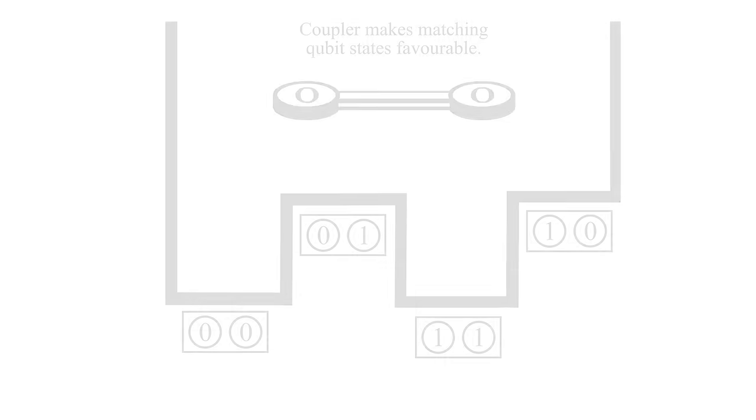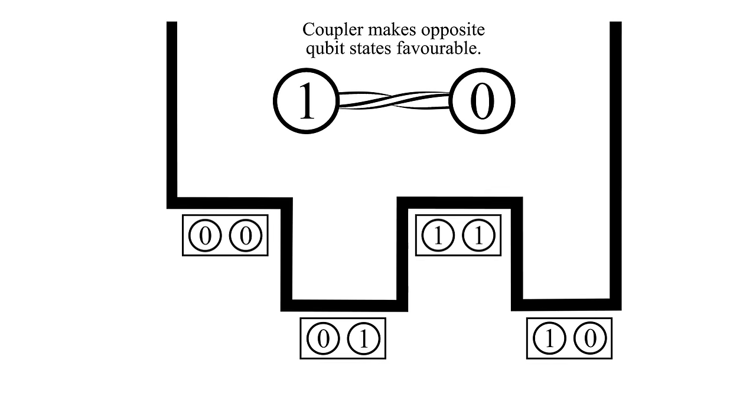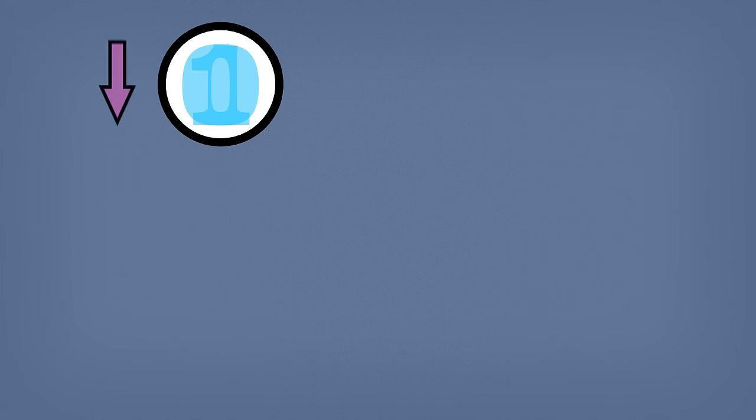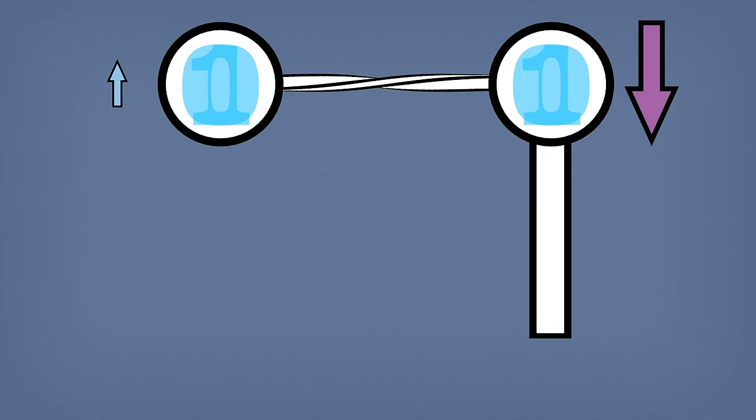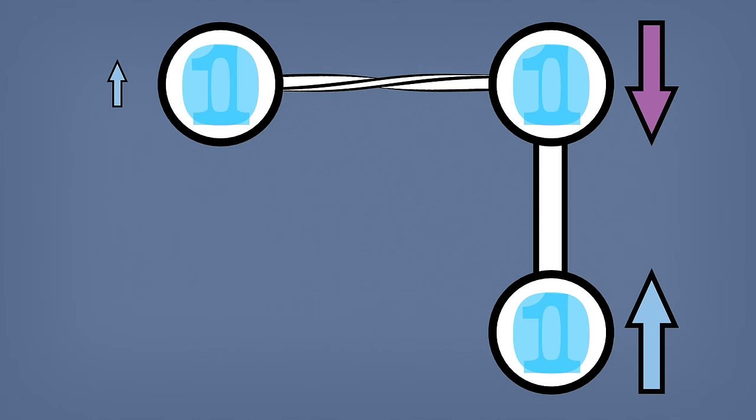If the coupler wants them to be opposite then it's lowering the energy of those states. Each qubit can have a bias applied to it and the qubits can interact by the couplers. As a user you can actually choose all the values for these biases and couplers, both the direction of them and also the strength.